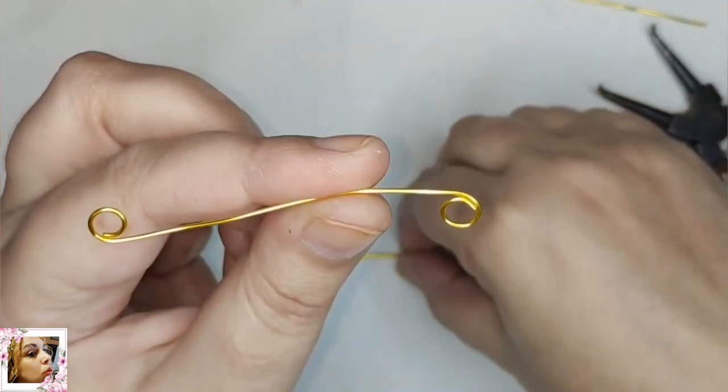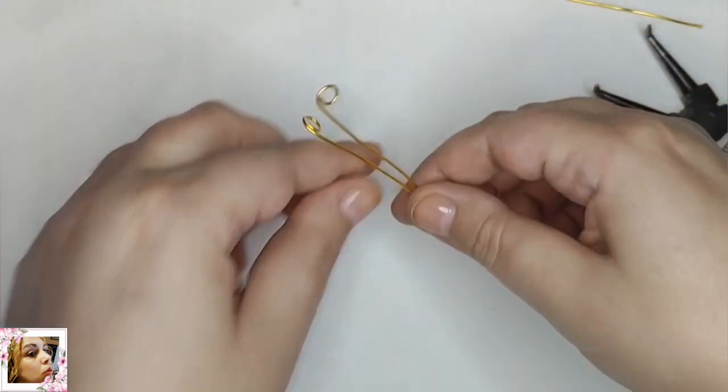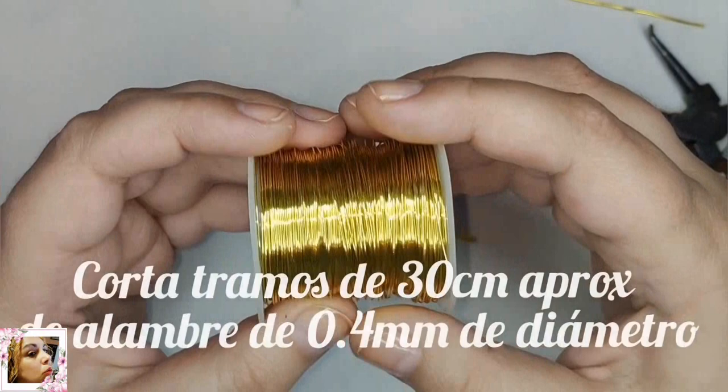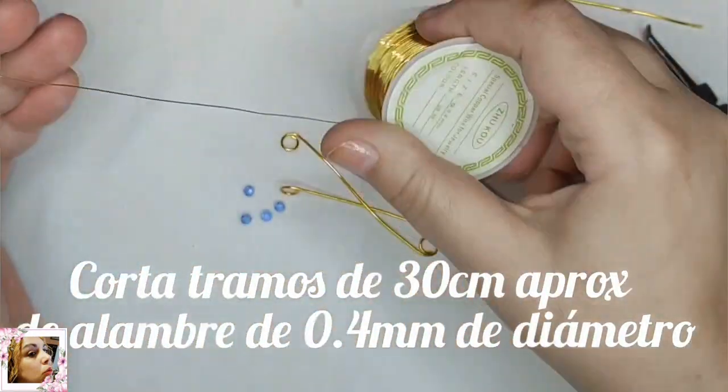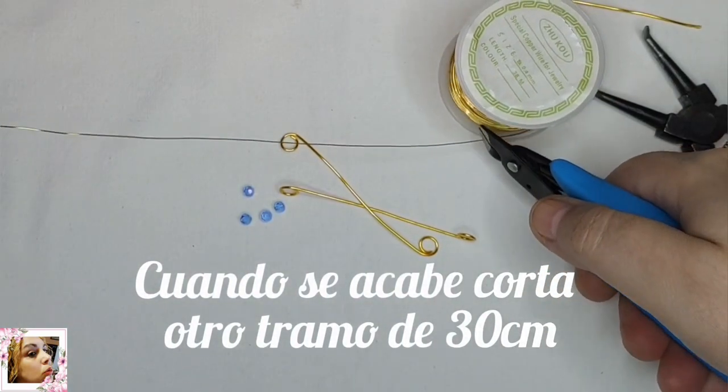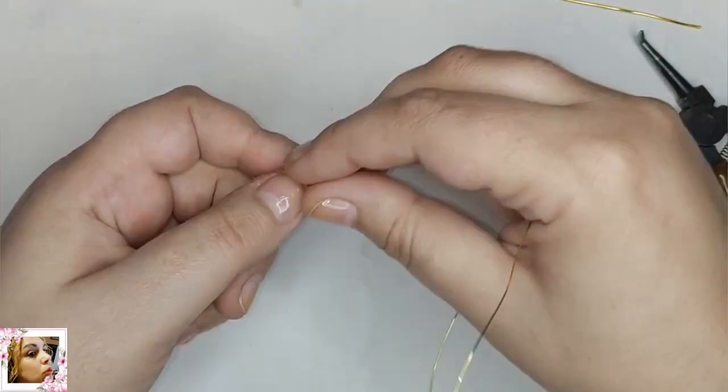Siguiente paso. Este lo voy a apartar, con que haga dos creo que es suficiente. Vamos a usar los avalorios. Y los vamos a coser a esos círculos con el alambre de 0.4 mm.